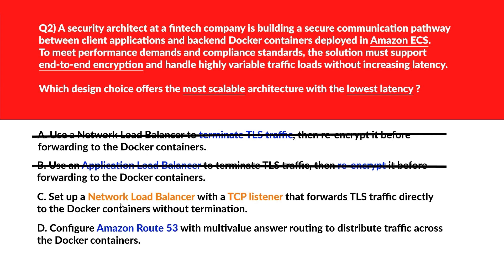Let's move to option C. Option C is: set up a Network Load Balancer with a TCP listener that forwards TLS traffic directly to the AWS containers without termination. Network Load Balancer with TCP pass-through delivers native TLS traffic directly to containers, maximizing scalability and maintaining encryption. Let's keep this. Option D says: configure Amazon Route 53 with multi-value answer routing to distribute traffic across the Docker containers. Route 53 routing improves distribution but lacks built-in traffic forwarding, encryption handling, or load balancing efficiency. Hence incorrect. Option C is the right answer.